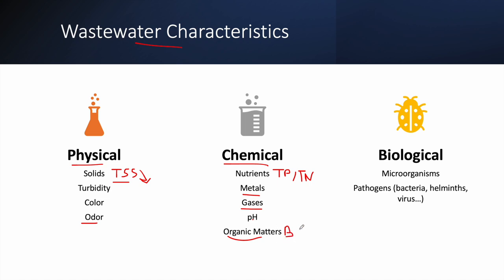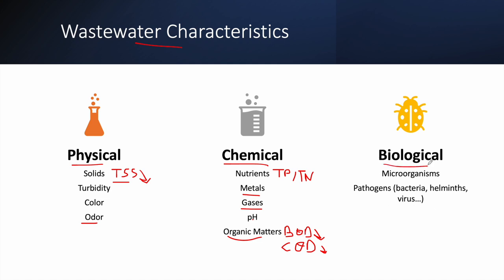Raw wastewater also contains organic matter, commonly known as BOD or Biological Oxygen Demand, and also COD or Chemical Oxygen Demand — both of which need to be highly reduced. Finally, we have biological components: mainly microorganisms and dangerous pathogens like bacteria, helminths, and viruses. We must provide treated water that is safe from all these pathogens.